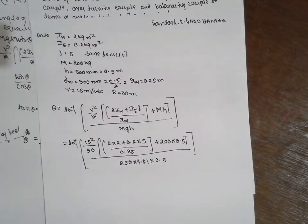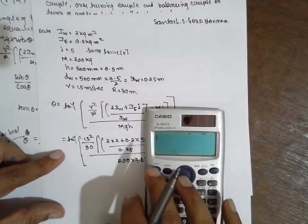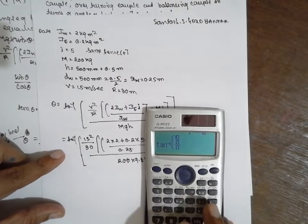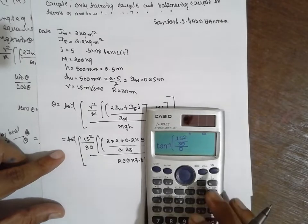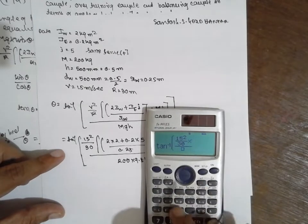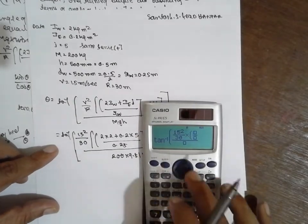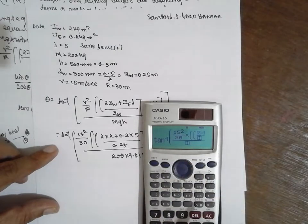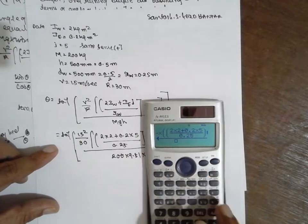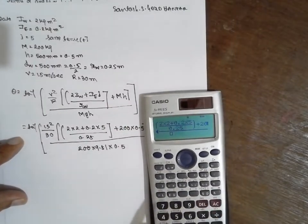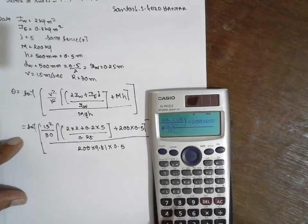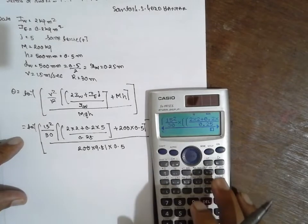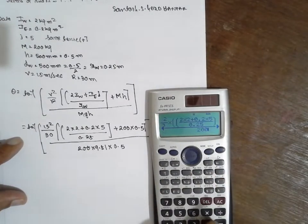I will use the calculator. Shift, tan inverse, bracket, 15 square divided by 30, into bracket open, one more bracket is required here. 2 into 2, plus 0.2 into 5, divided by 0.25. Close the bracket, plus 200 into 0.5. Close the bracket, 200 into 9.81 into 0.5.